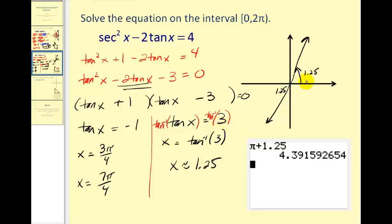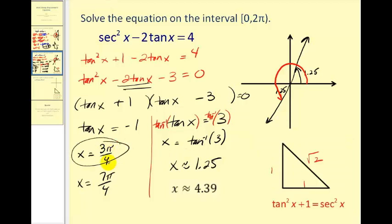pi plus 1.25 radians, which is approximately 4.39. So it looks like we have four different solutions for this equation.